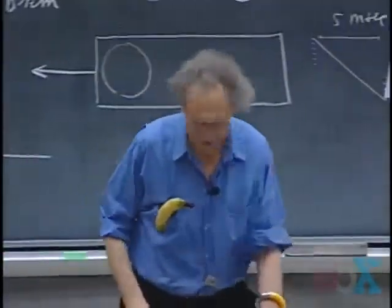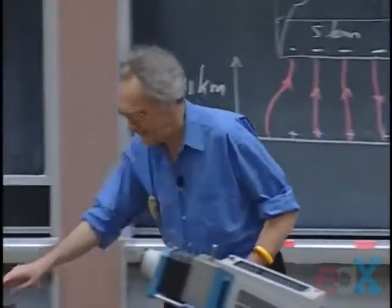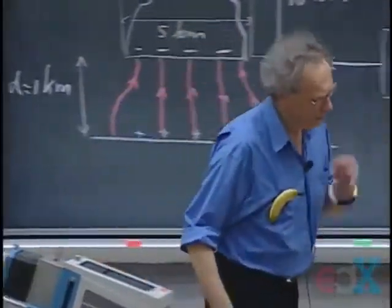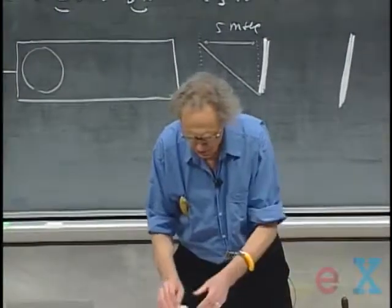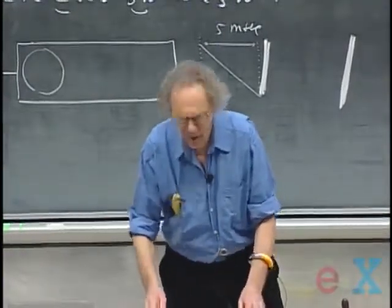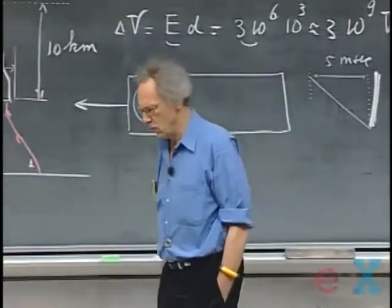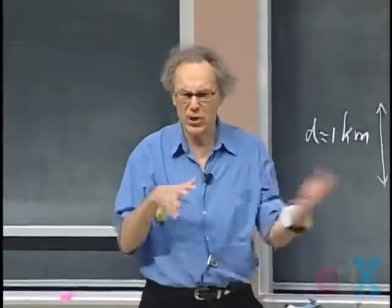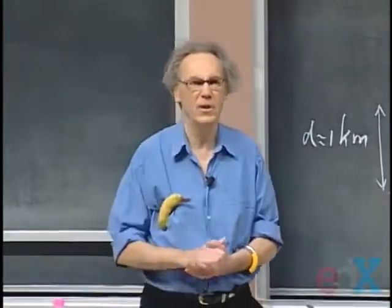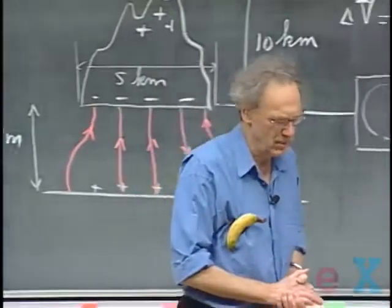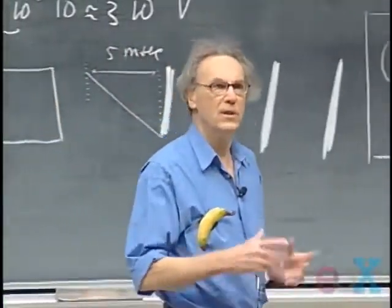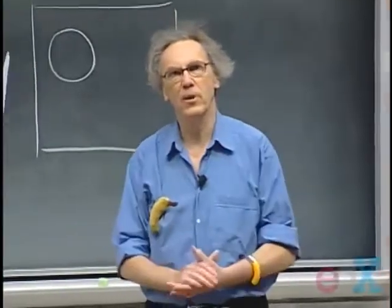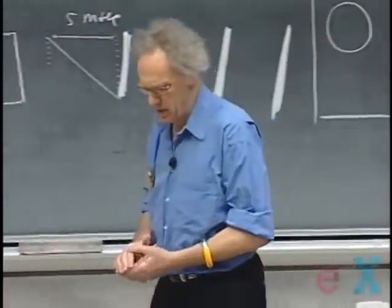Lightning can be dangerous — it can cause fires and ignite fumes. If you gas your car, the flow of gasoline can charge up the nozzle through friction; that's why the nozzle is always grounded, because a spark could cause an explosion. If you fill a balloon with hydrogen, the flow of hydrogen can charge the balloon, and a spark can then ignite it.